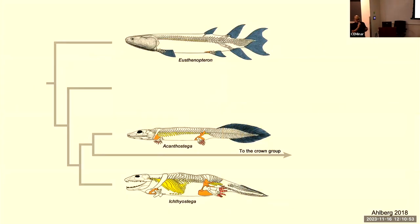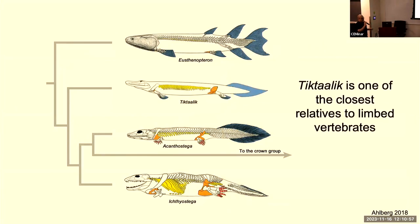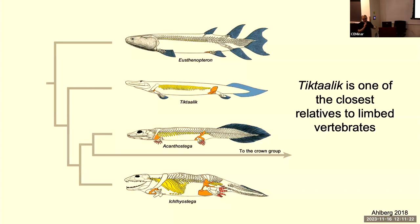We've been studying Tiktaalik and these specimens for the last 20 years. Tiktaalik is really important for understanding the history of vertebrates because it sits right at this nexus where a whole suite of anatomical changes are happening. We have three-dimensionally preserved materials, many individuals across the size range, and an incredibly complete post-cranial skeleton — something we haven't had for any other species fitting in this space.